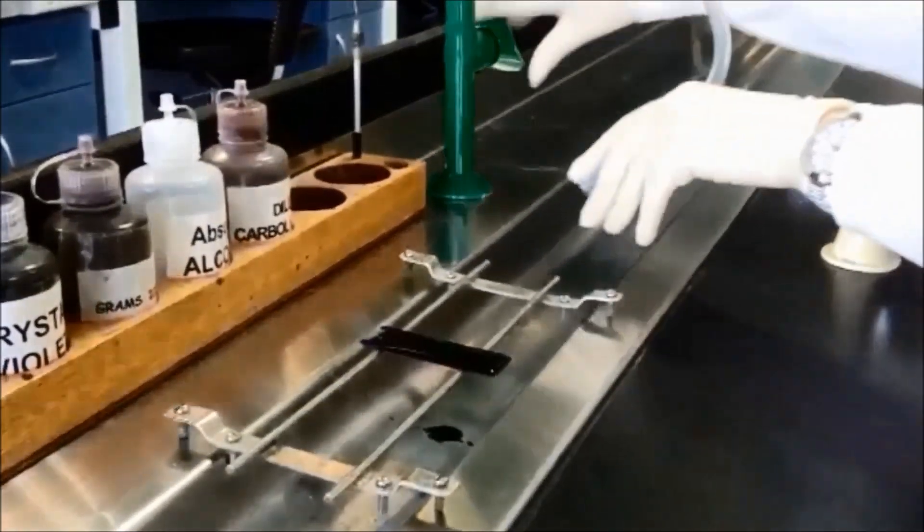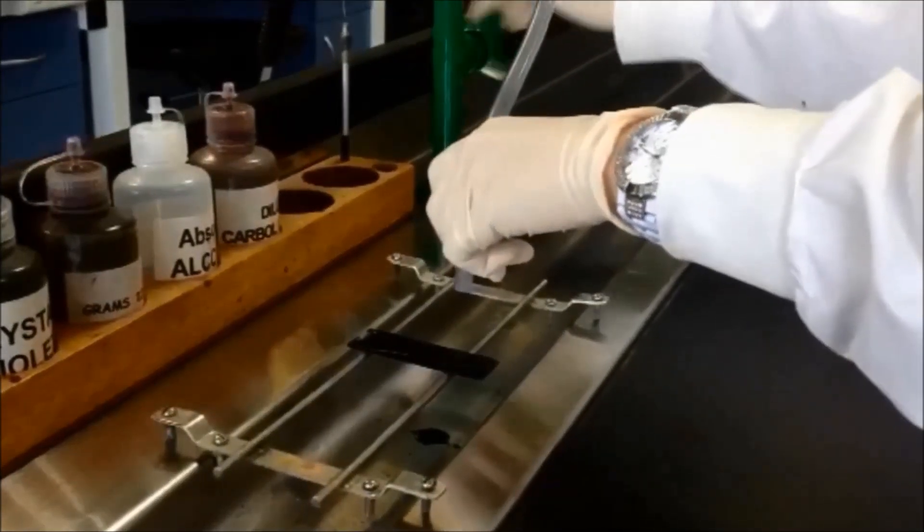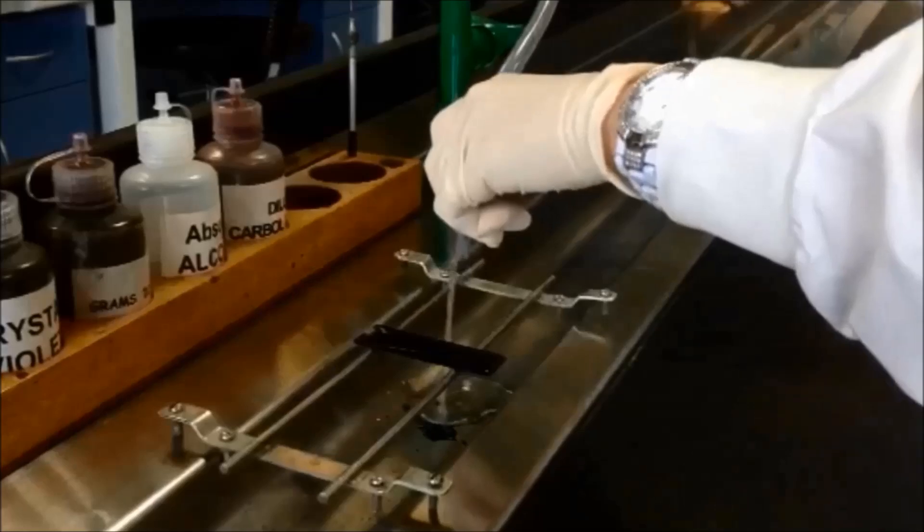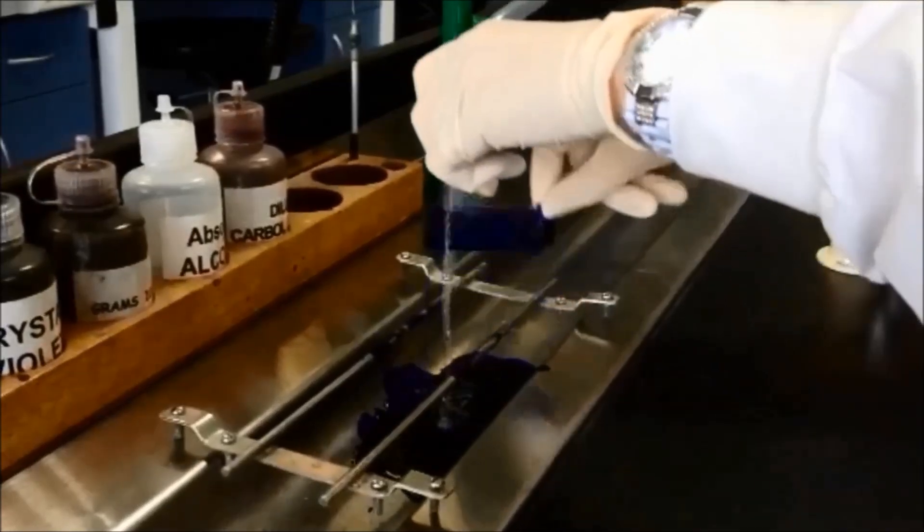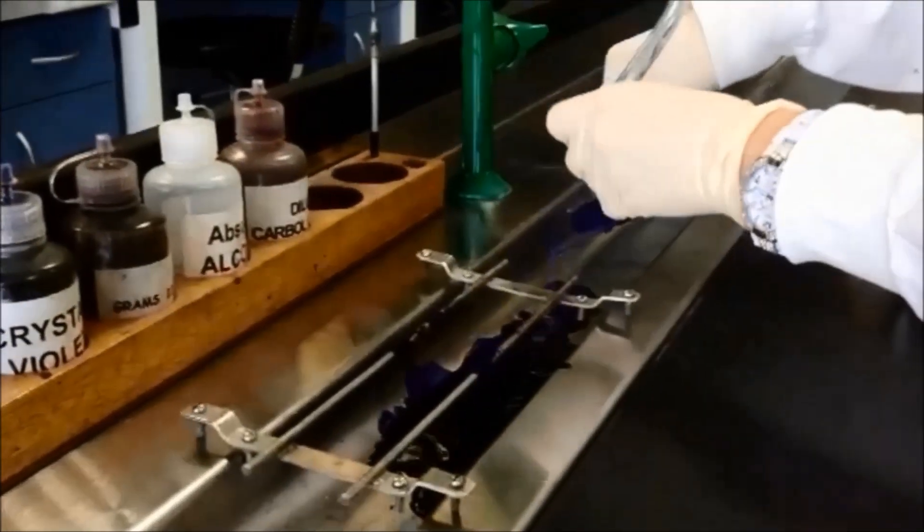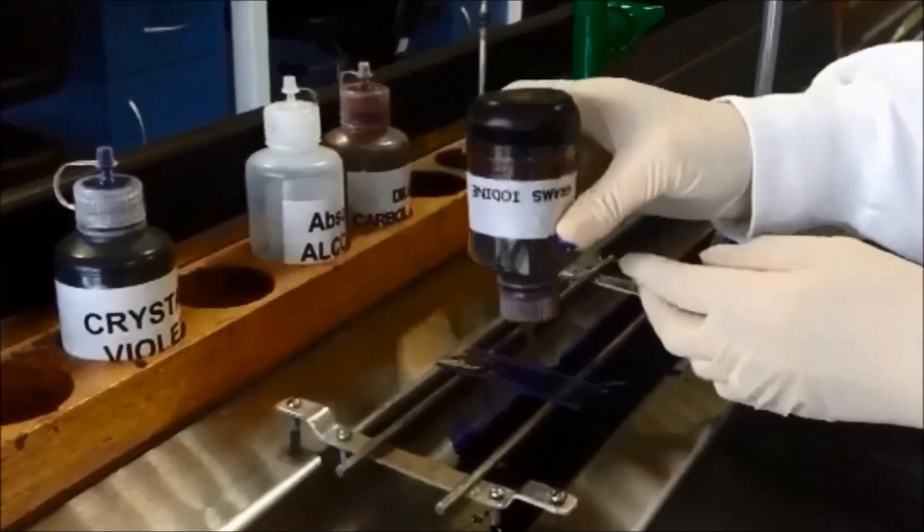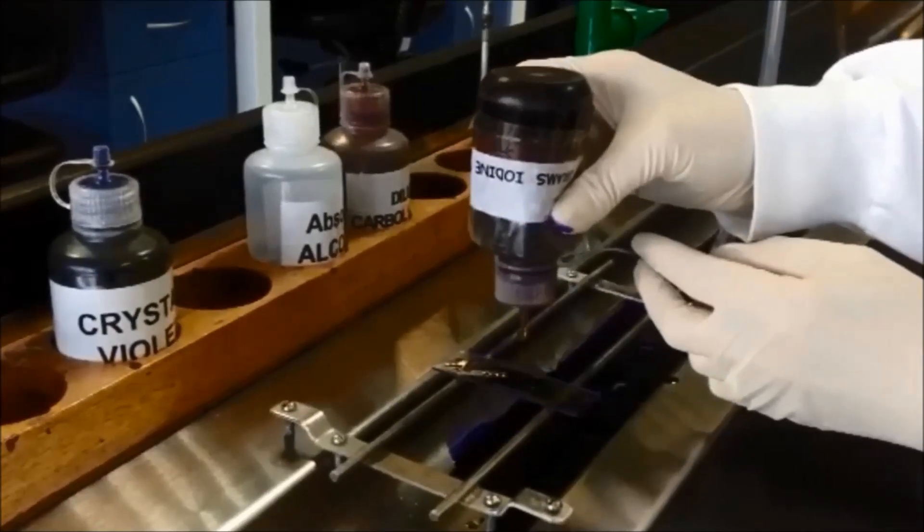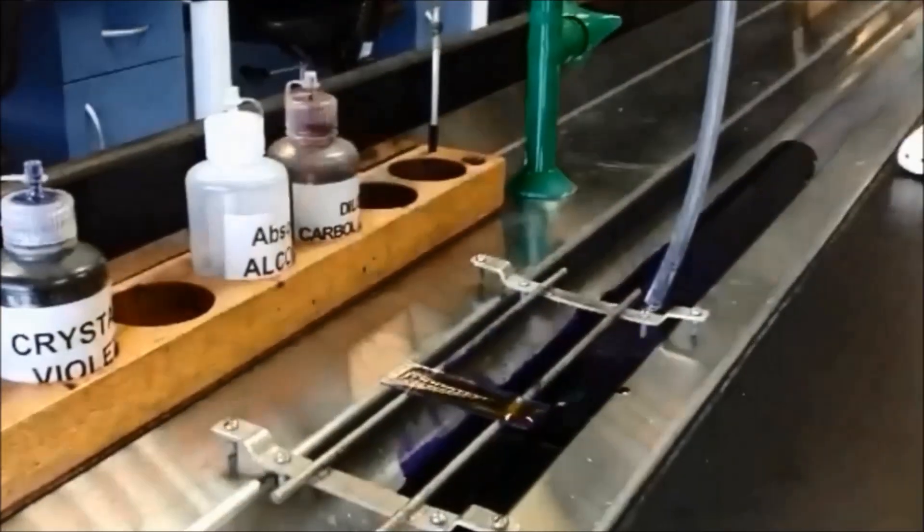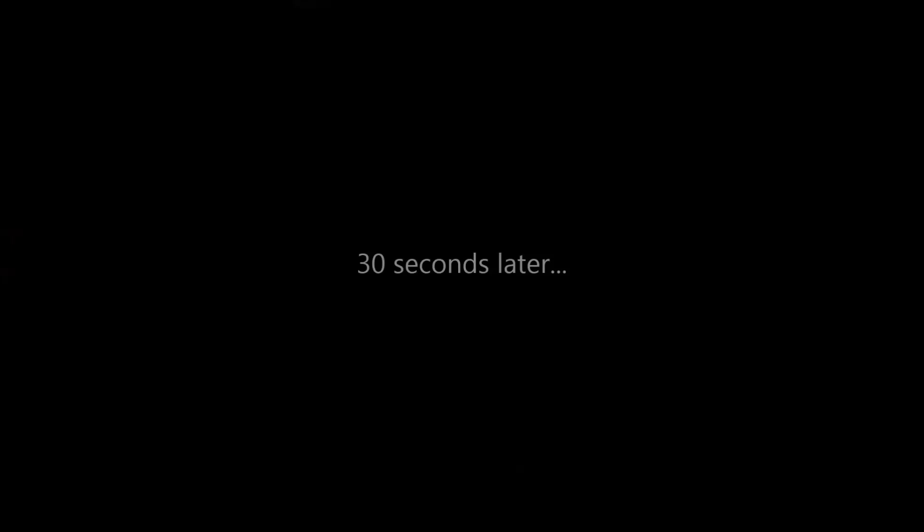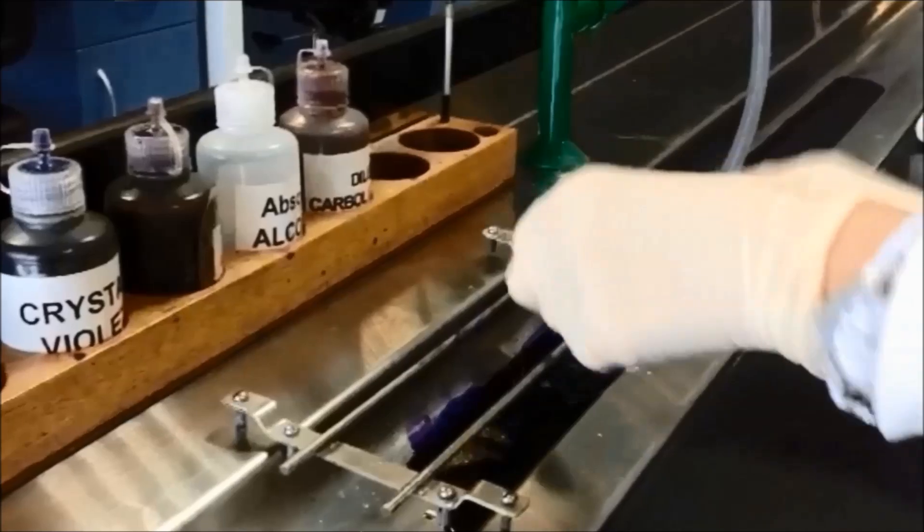Quickly rinse off the stain with a thin stream of water from the tap. Tip the slide at an angle to remove excess water. Pour on the Gram's Iodine Solution and allow to act for 30 seconds. Rinse off with water.